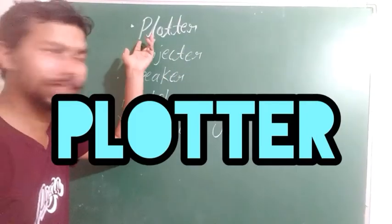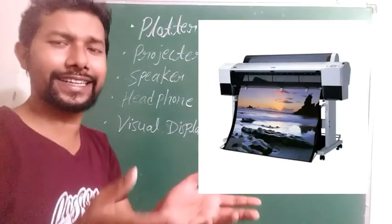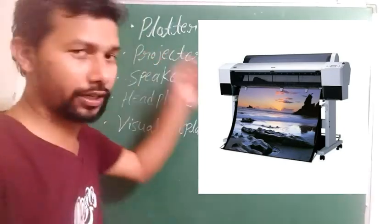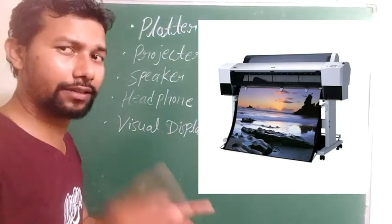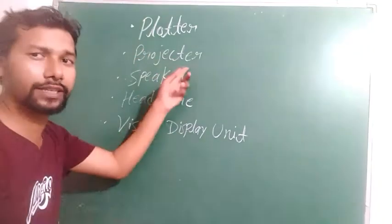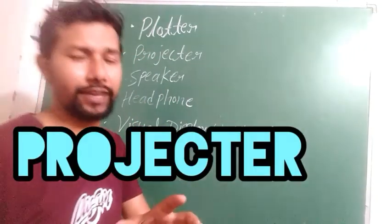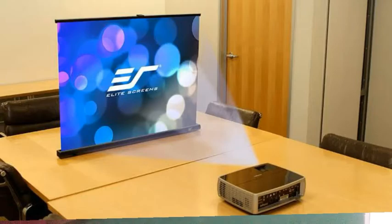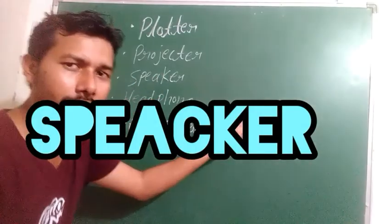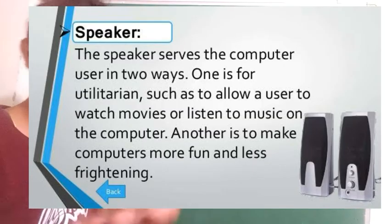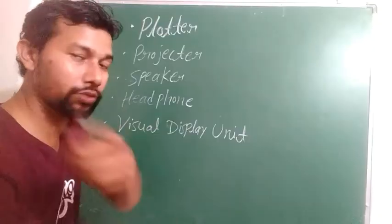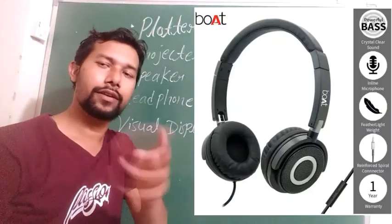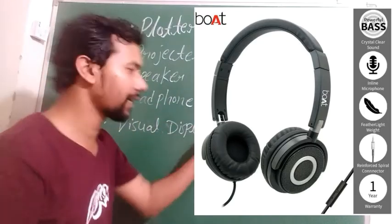Plotter is a large printer. While a normal printer prints a maximum of A4 size, a plotter is used for big advertisements and is capable of printing on a large scale with very clean pictures. Projector is a large-scale display device; since a monitor is limited in size, a projector provides a much bigger display and can be selected according to your use. Speaker is used for sound output — you can listen to songs using a speaker. Headphone is a modern output device that attaches to devices like your mobile so you can privately enjoy audio.